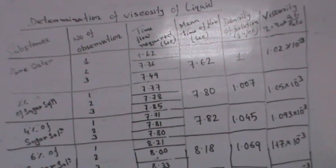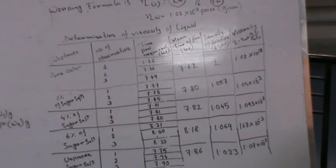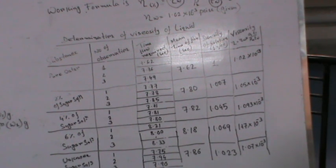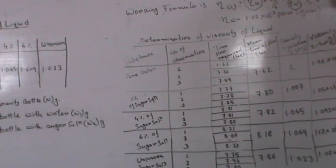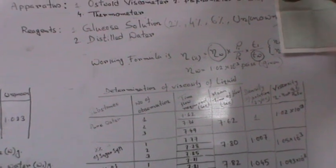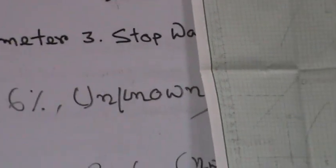With these parameters, the viscosity values need to be plotted against the percentage of solution. The y-axis should be viscosity and the x-axis should be the concentration (percentage) of the sugar solution. For the unknown solution, you put its viscosity on the y-axis, draw a horizontal line to the calibration curve, and then drop a vertical line to the x-axis to read off the percentage composition of that unknown solution.